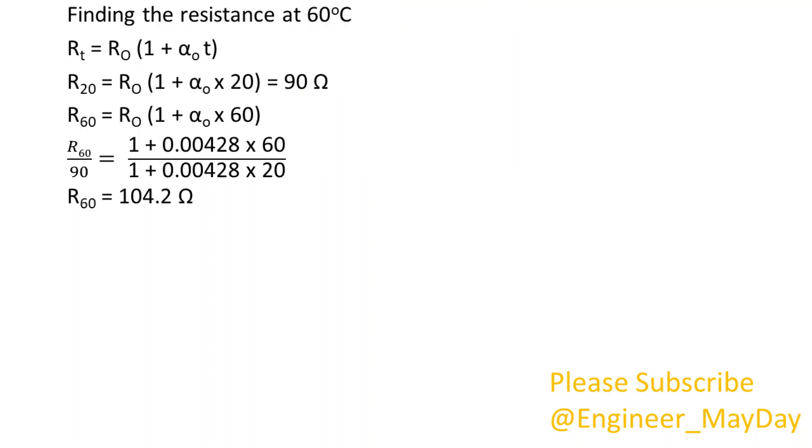Finding the resistance at 60 degrees Celsius: R60 equals 104.2 ohms. Finding the current at 20 degrees Celsius: I1 equals 2.556 amperes.